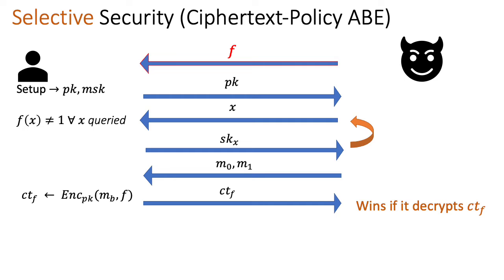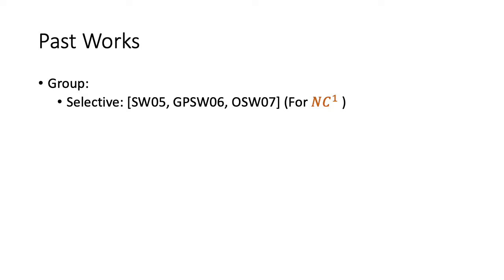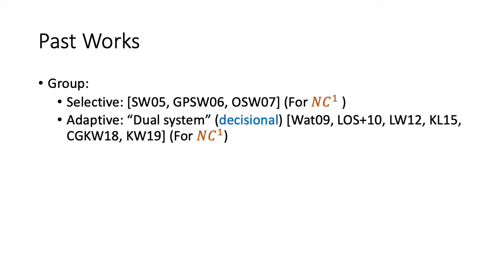Many early works first tried to build selective security. Later works moved on to reach adaptive security. Looking at the line of works building secure ABE — both group assumptions and lattice, both selective and adaptive security — early works first built selective security from bilinear groups. Later, there was the well-known dual system technique introduced by Waters, and adaptive security was realized for policies in NC1, based on different types of decisional group assumptions. However, the reliance on decisional assumptions seems to be inherent when using this technique, whereas early works with only selective security can actually build from search assumptions.